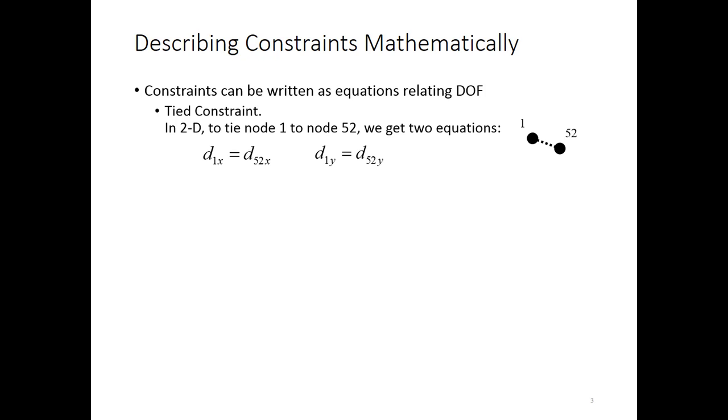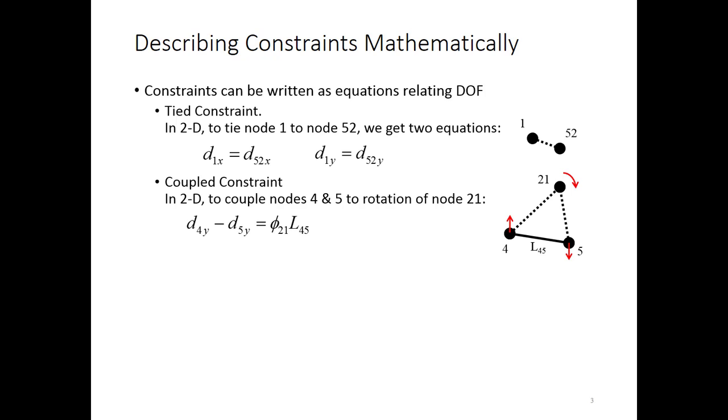D1x is equal to D52x and D1y is equal to D52y. For a coupling constraint, it's a bit more complicated. In 2D, suppose you want to couple nodes 4 and 5 to rotation of node 21. So what that means is if node 21 rotates as shown, that's going to force nodes 4 and 5 to move up and down and possibly left and right. The equation that links these together would be that D4y minus D5y is equal to phi 21, the slope of node 21, times the distance between nodes 4 and 5. I've labeled that here as L4,5. So that's an example of a coupled constraint equation.